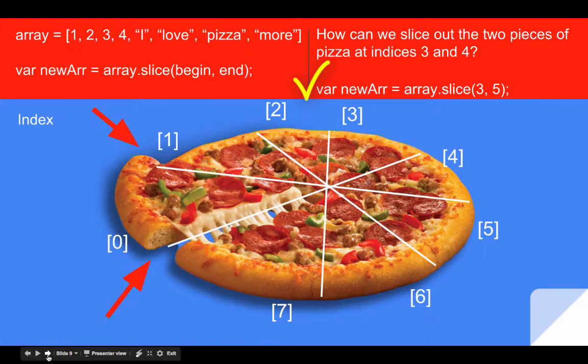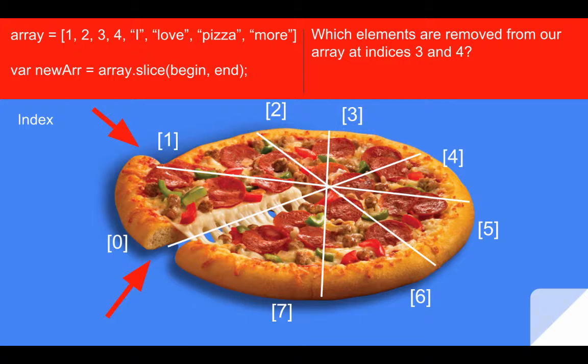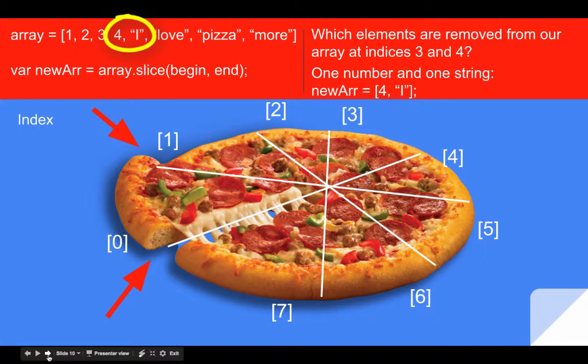If what you type looks like this, then you're correct. So we're going to make a slice starting at index three and ending at index five to get the pizza at index three and four. We don't also get the slice of pizza at index five. See, it's actually quite easy. Now, once we've made this slice to remove the third and fourth slices of pizza, which elements are copied from our original array? That's right, the number four and the string I. The number four is at index three and the string I is at index four.